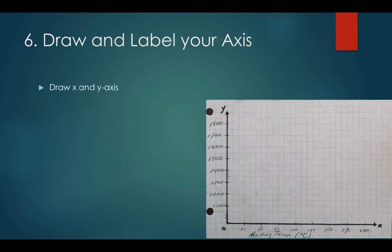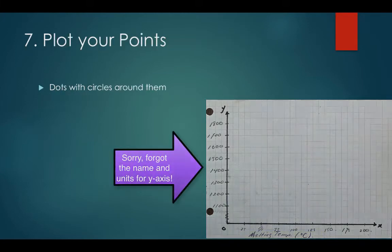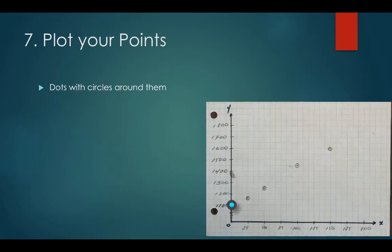We'll draw our x and y axis and we'll label it with the name and the units in brackets. Now that we have our axes drawn, we're going to plot our points. We're going to put a dot down and put a circle around it.